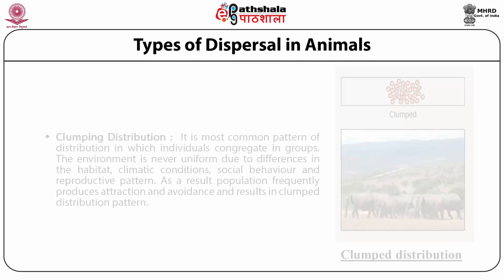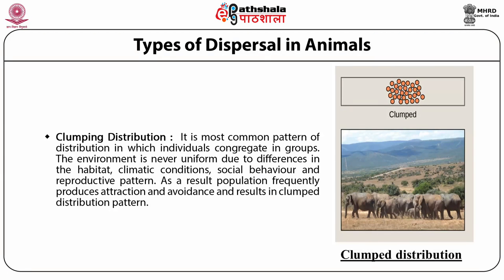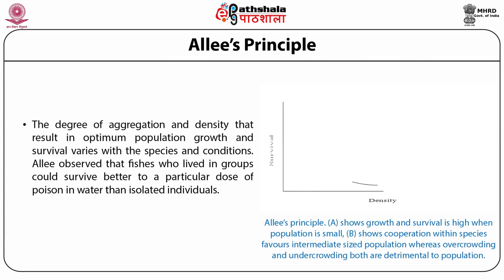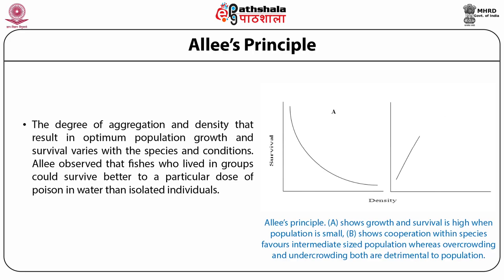Autotoxicity among plants of arid regions also results in uniform distribution of plants in these areas. The third type of distribution is clumped distribution, also known as clustered or aggregated distribution. It is the most common pattern, in which individuals congregate in groups with some scattered individuals outside the group. The environment is never uniform due to differences in habitat, climatic conditions, social behaviour, and reproductive patterns. As a result, populations frequently produce attraction and avoidance, resulting in clumped distribution. Human populations show clumped distribution due to their economic conditions, geographic factors, and social behaviour.